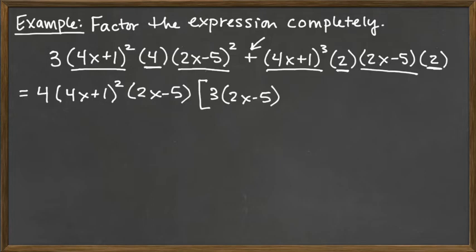Following that plus sign, we do the same sort of assessment. What did we pull out? What's left there? The two copies of the 2 came together to give us the 4, and then the 4x plus 1 raised to the second power was pulled out, so that leaves us with one more factor there of 4x plus 1. The 2x minus 5 was pulled out completely, so that finishes us off.